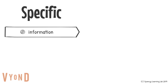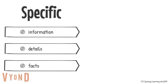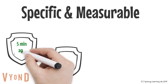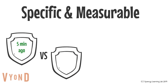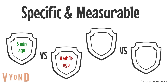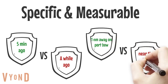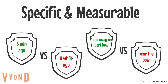To be specific in communication, it involves useful information, details, and facts. Very often, such information is expressed using numbers, i.e. being measurable, such as 'five minutes ago' as compared to 'a while ago', or 'one nautical mile away on port bow' as compared to 'near the bow'.